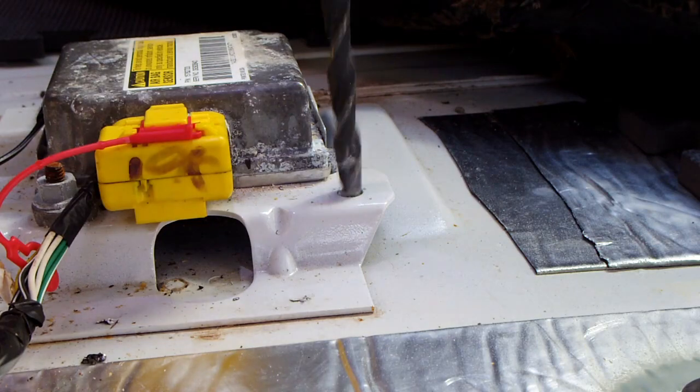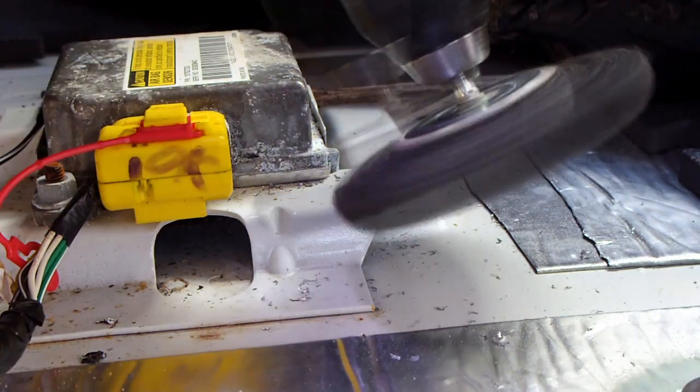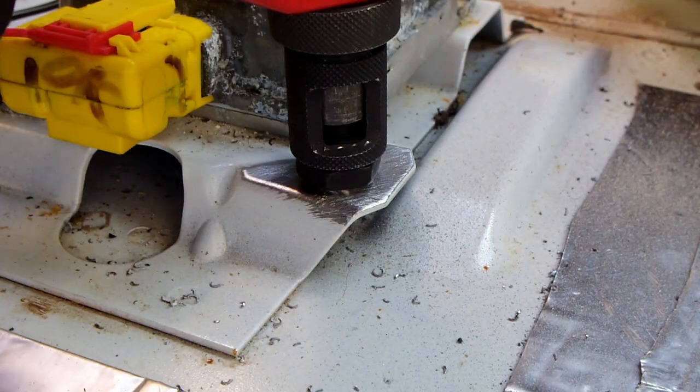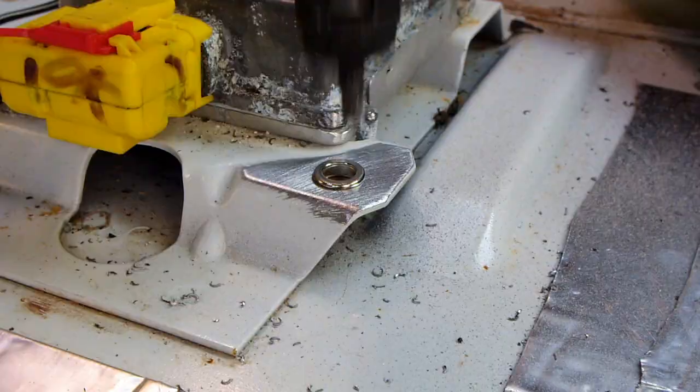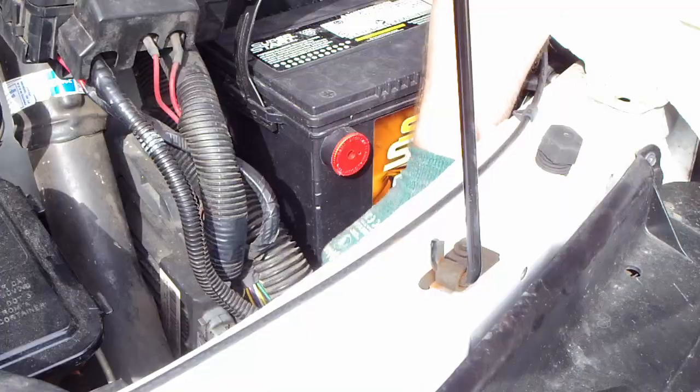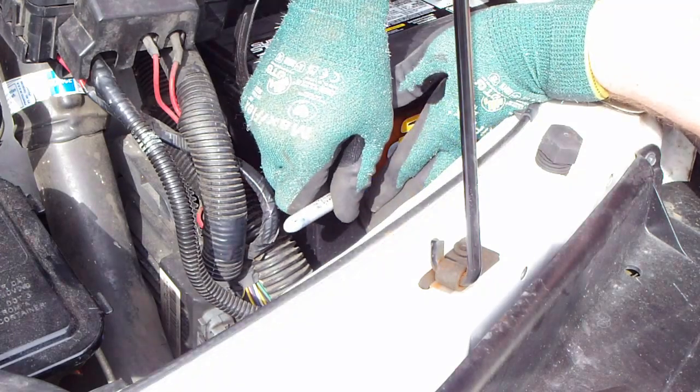Next, we need to find a good ground location. Make sure you sand any ground location used down to the bare metal. Safely route the battery cable under the vehicle and up to the starting battery. Terminate the cable at the appropriate length.